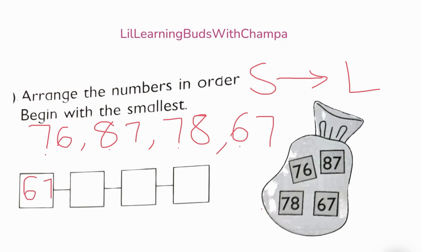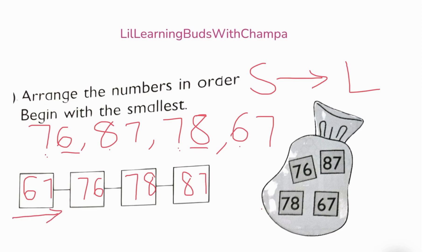So our first number is 67. What's our second number? We're looking at the 70s — so 76 or 78? Is 6 bigger or 8 bigger? 76! That's right — 76, then 78, and then comes our largest number, 87. So we began with the smallest number which is 67, and 87 is our largest number. Good job!